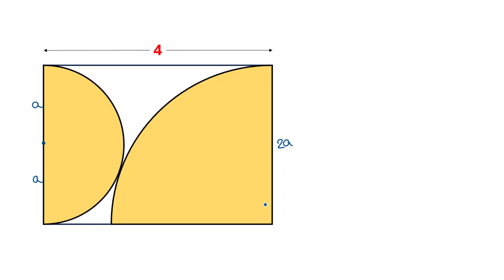Now this point is the centre of this circle and this point is the centre of this circle. Consider this point is the tangency point of these two circles. So this tangency point and the centres of both circles — all three points are collinear. So these three points lie on this line. Draw this line.